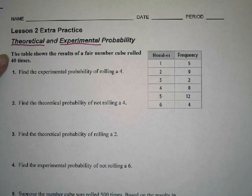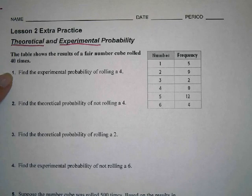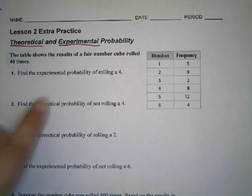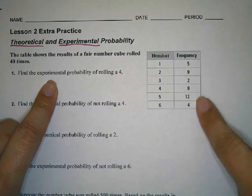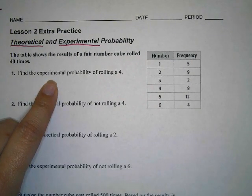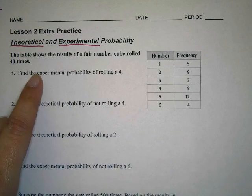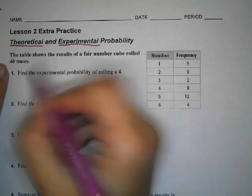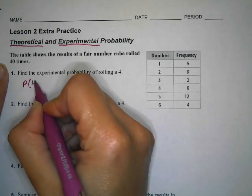The table shows the results of a fair number cube rolled 40 times. Find the experimental probability of rolling a 4. Experimental is what we did when we actually threw the dice. We had 40 times that it was thrown, so the probability of rolling a 4